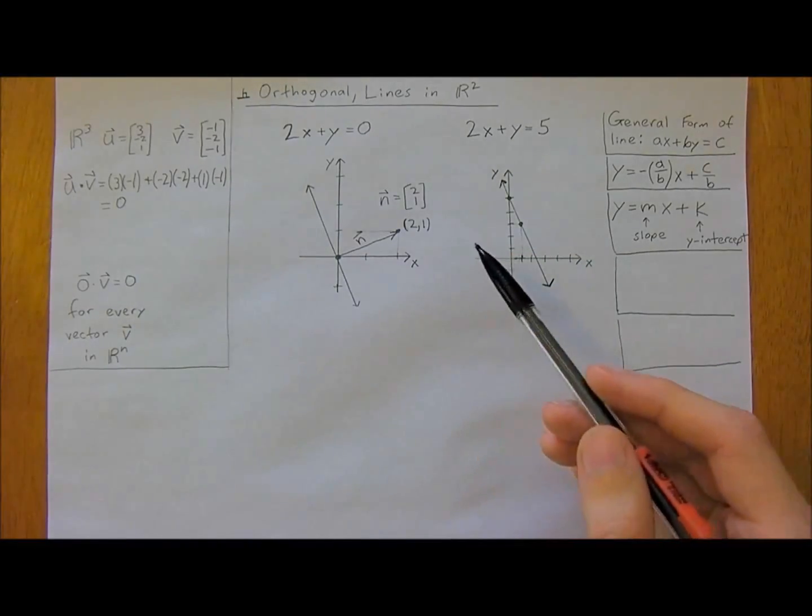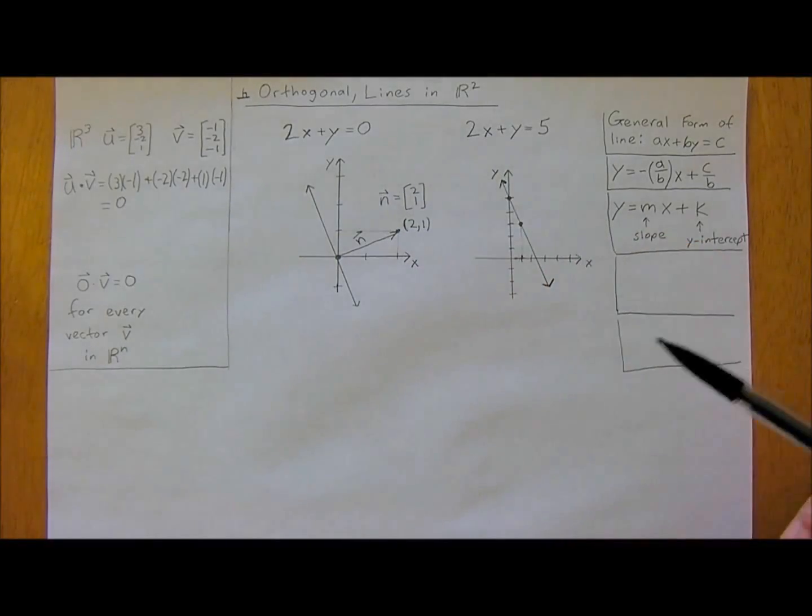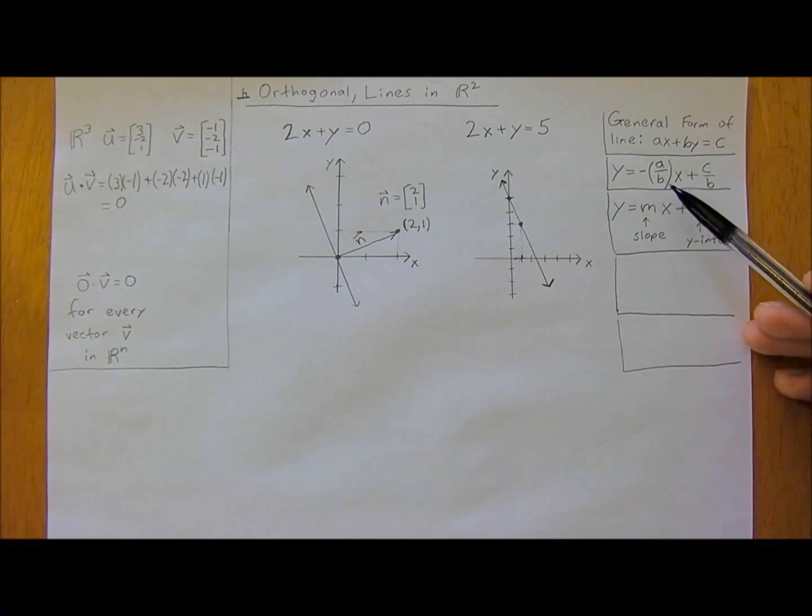Now I'd like to move into lines in R². Recall that the general form of a line is AX plus BY equals C, or you can rewrite this as Y equals minus A over BX, which is your slope, plus C divided by B, or in point slope form which most people are familiar with, we have Y equals MX plus B, or I just used K in this case because we've already used B up above. K represents the Y-intercept.